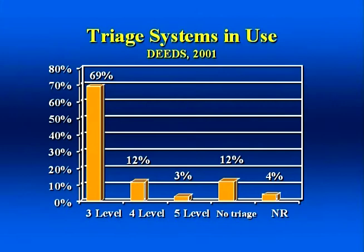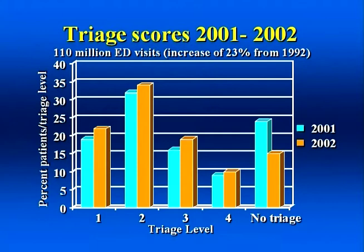So, what systems are we using in the United States? This data is the DEEDS data, published in 2001 by the Emergency Nurses Association, and reflects approximately one-third of all emergency departments in the United States. At that time, most emergency departments were still using three-level systems, with a few using four-level and even fewer using five-level. We expect that number will continue to dramatically shift towards more and more hospitals using five-level systems.